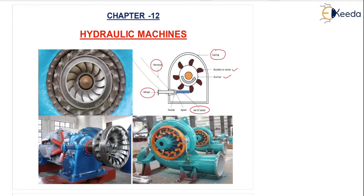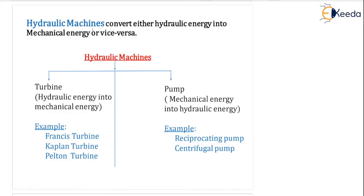Other hydraulic machines are also shown in this diagram, and we are going to see them one by one in detail — the Kaplan turbine, the Francis turbine, and the reaction turbine. Hydraulic machines are defined as machines that convert either hydraulic energy into mechanical energy or mechanical energy into hydraulic energy. The two major classifications are turbine and pump.